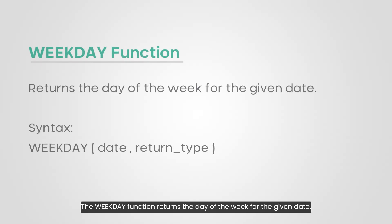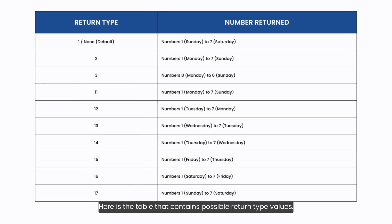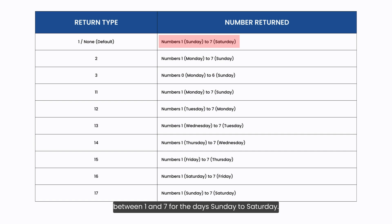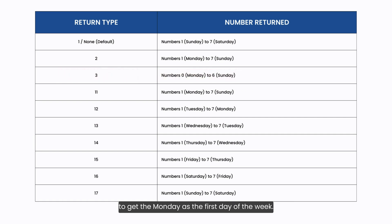The WEEKDAY function returns the day of the week for a given date. This function takes two arguments: a date and an optional return type. Here is a table containing possible return type values. By default, the WEEKDAY function returns a number between 1 and 7 for the days Sunday to Saturday. To get the Monday of the week, I will use return type 3 to set Monday as the first day of the week.